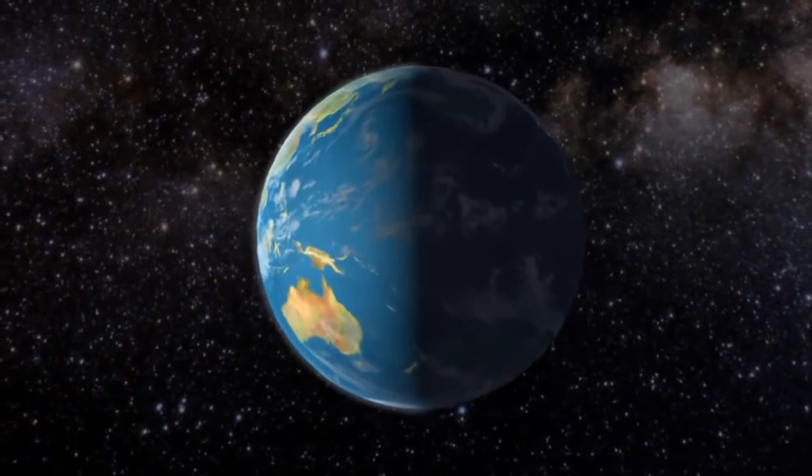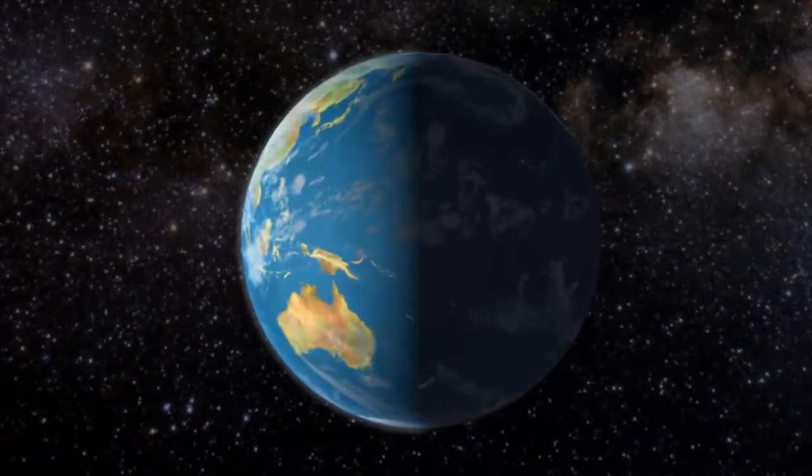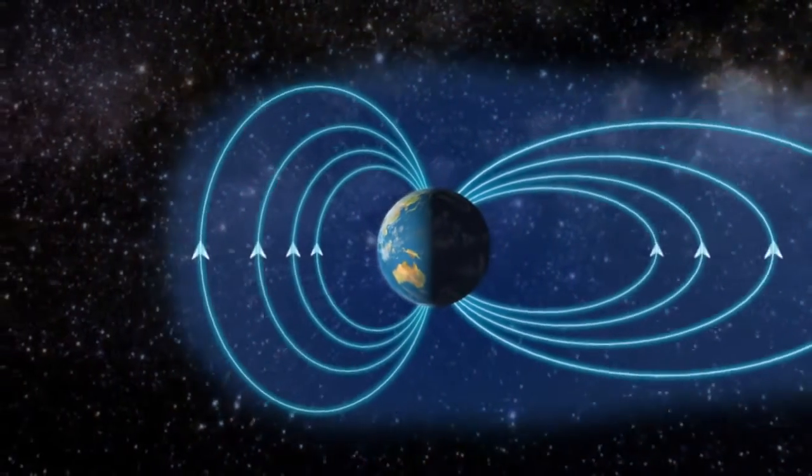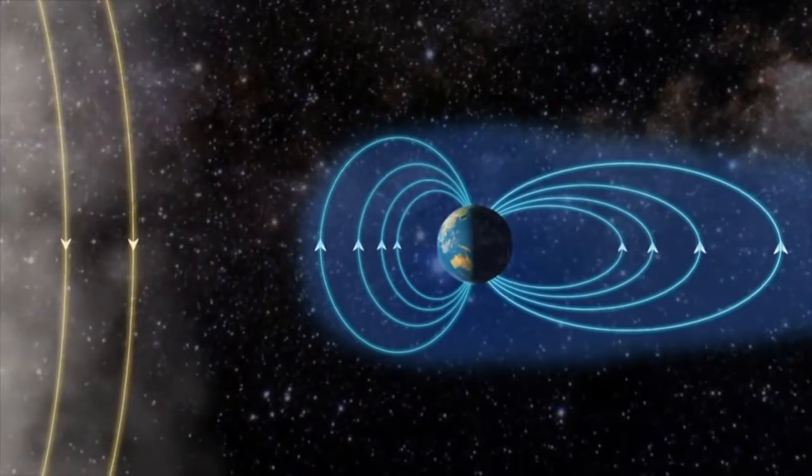When the solar storm reaches our planet, something strange happens. An invisible shield, the Earth's magnetic field, deflects the storm.